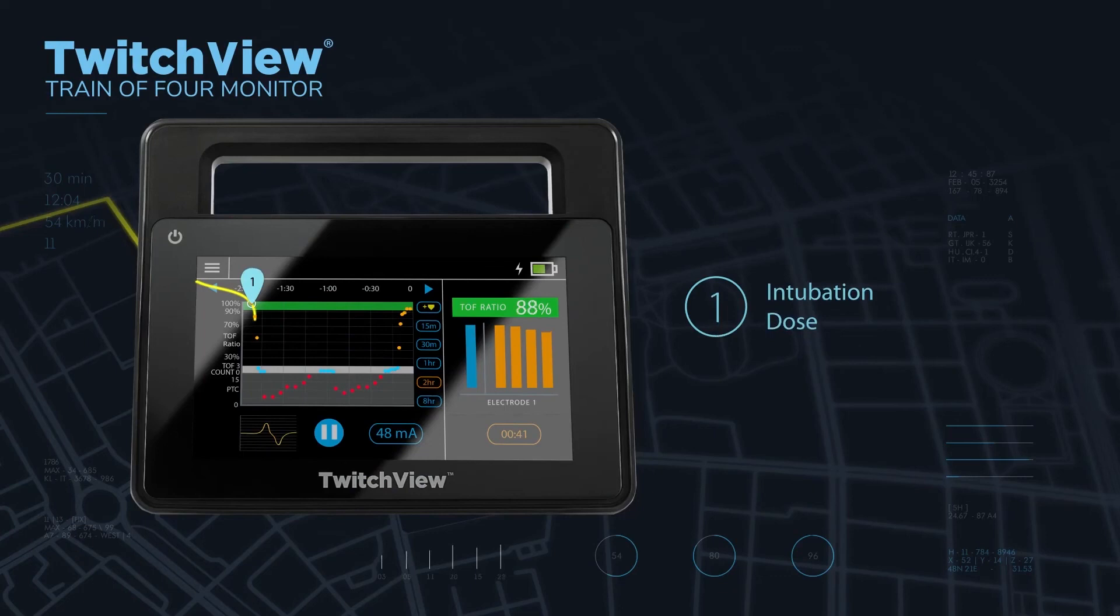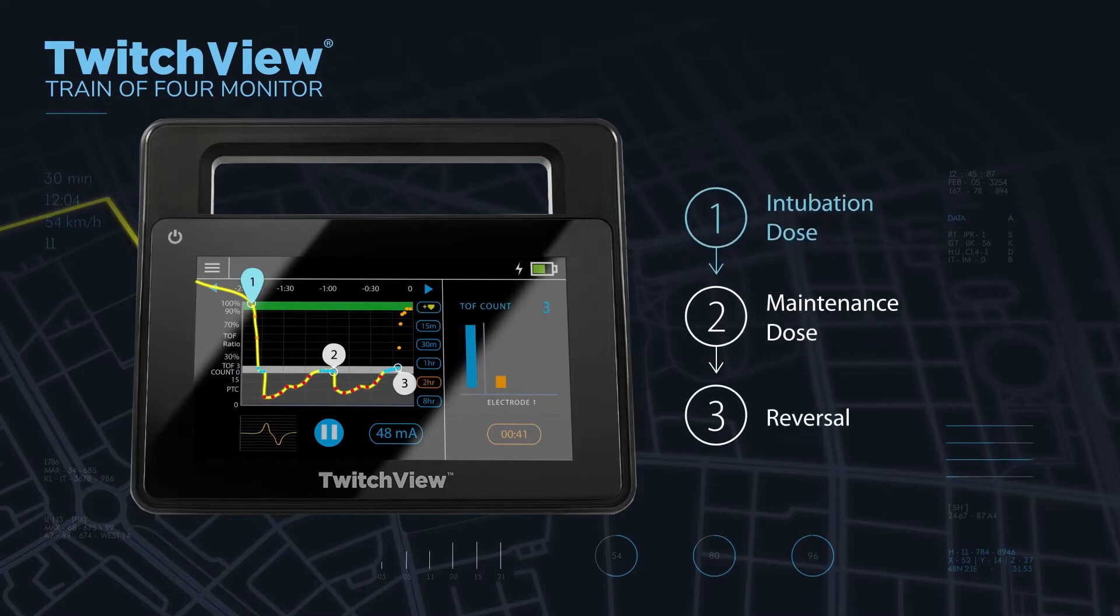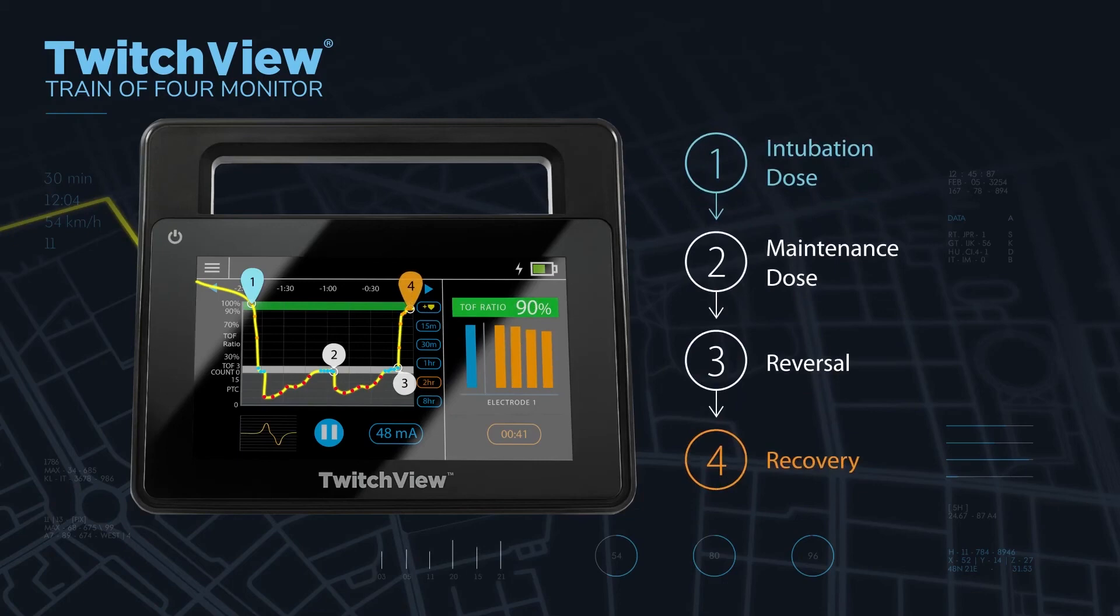Using real-time measurements and the patient-specific trend plot as a guide, you can titrate paralytic to proactively manage a desired depth of block and determine the optimal reversal drug and dosage.